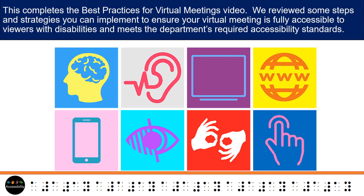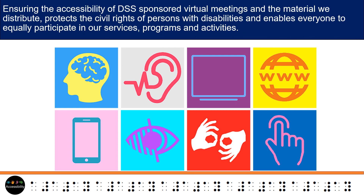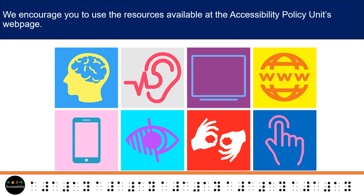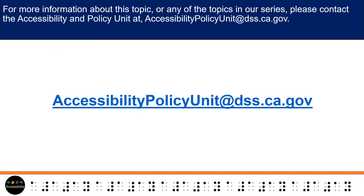We reviewed some steps and strategies you can implement to ensure your virtual meeting is fully accessible to viewers with disabilities and meets the department's required accessibility standards. Ensuring the accessibility of DSS sponsored virtual meetings and the material we distribute protects the civil rights of persons with disabilities and enables everyone to equally participate in our services, programs, and activities. We encourage you to use the resources available at the Accessibility Policy Unit's web page. For more information about this topic or any of the topics in our series, please contact the Accessibility Policy Unit at accessibilitypolicyunit@dss.ca.gov.